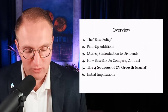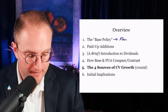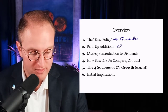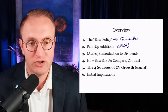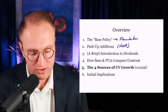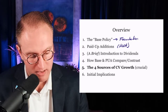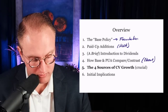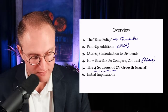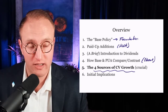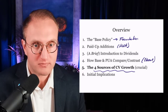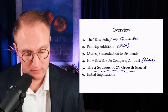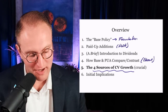Here's our overview. We're going to start with the base policy, which is essentially the foundation of all dividend-paying whole life insurance products. Then we'll get to PUA, or paid-up additions. Part three is a brief introduction to dividends. I'll give you a chart about how base and PUA compare, and that'll prepare us to state specifically what the four sources of cash value growth are. If you can understand why cash value grows the way it does, you're ahead of a lot of agents. And then we'll end with some initial implications.